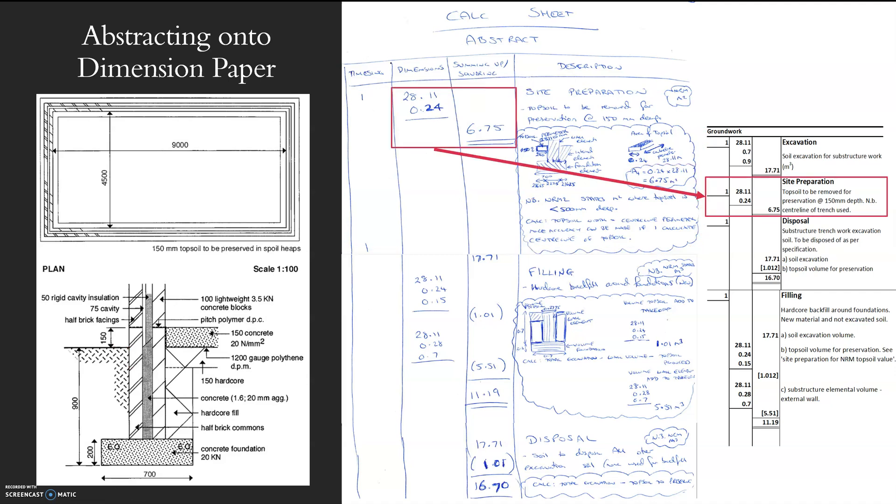If you have a look at Wills' book, this is what this section represents. Topsoil to be removed. 28.11 times 0.24. So all good.